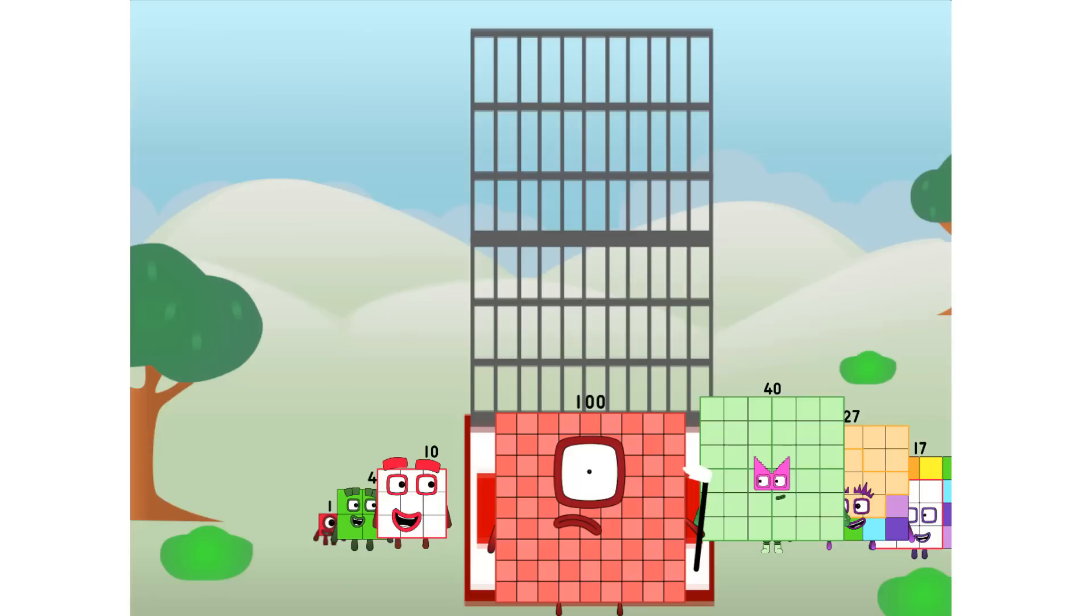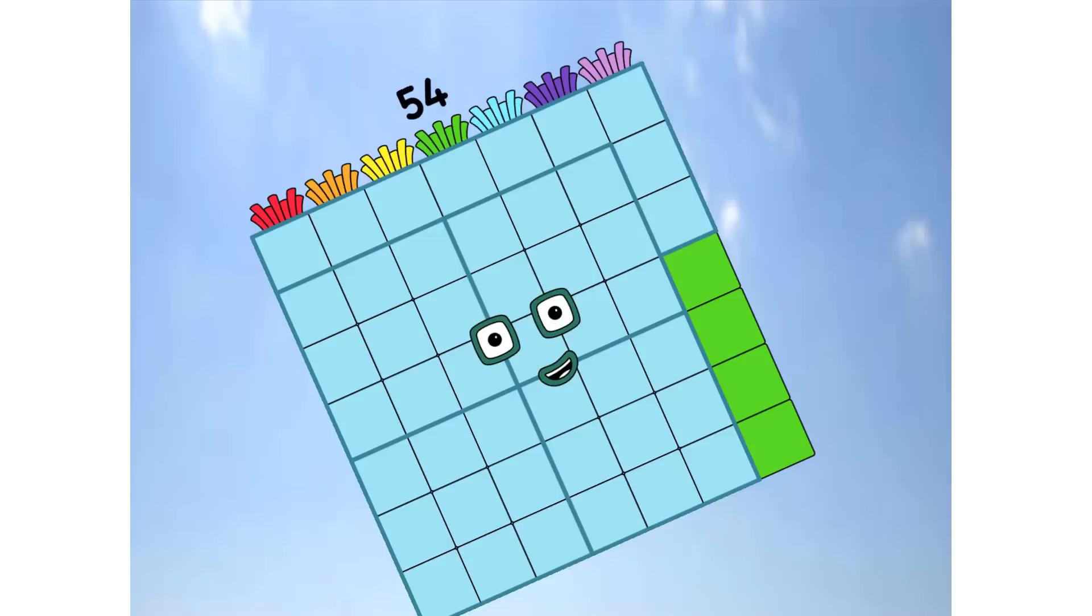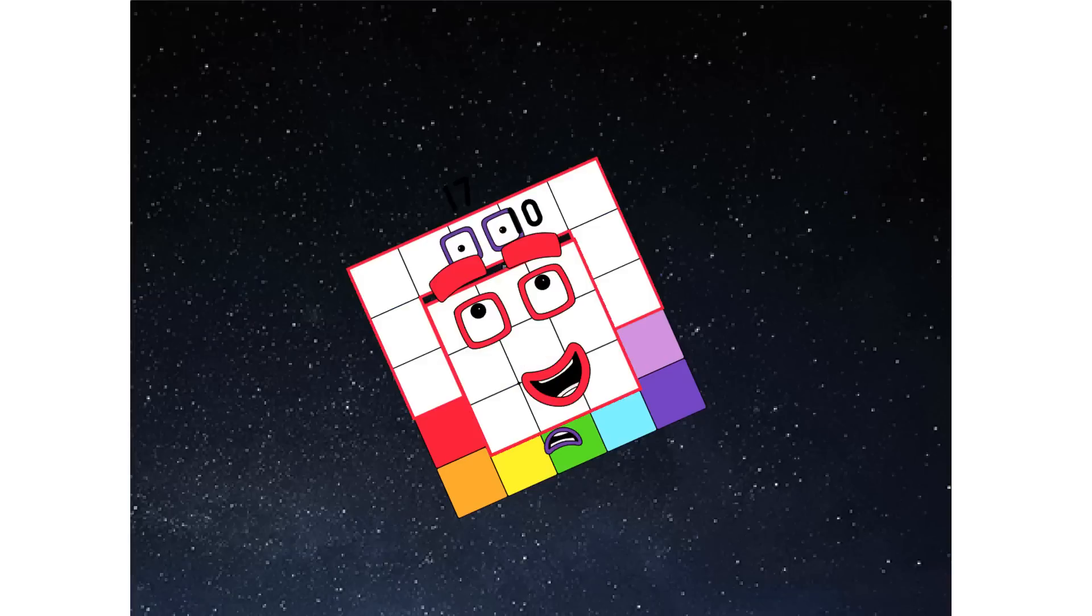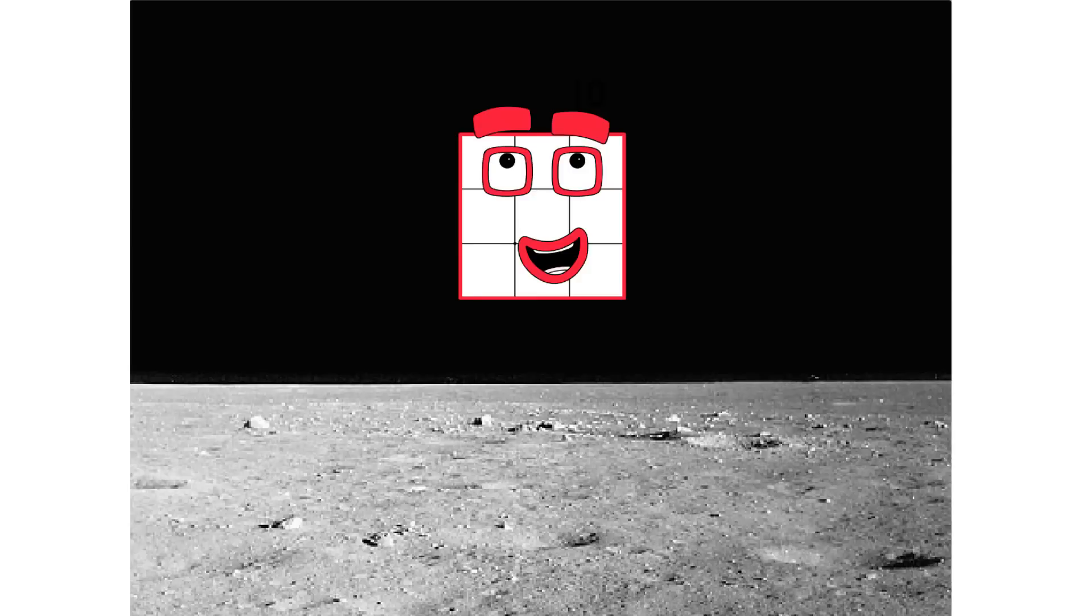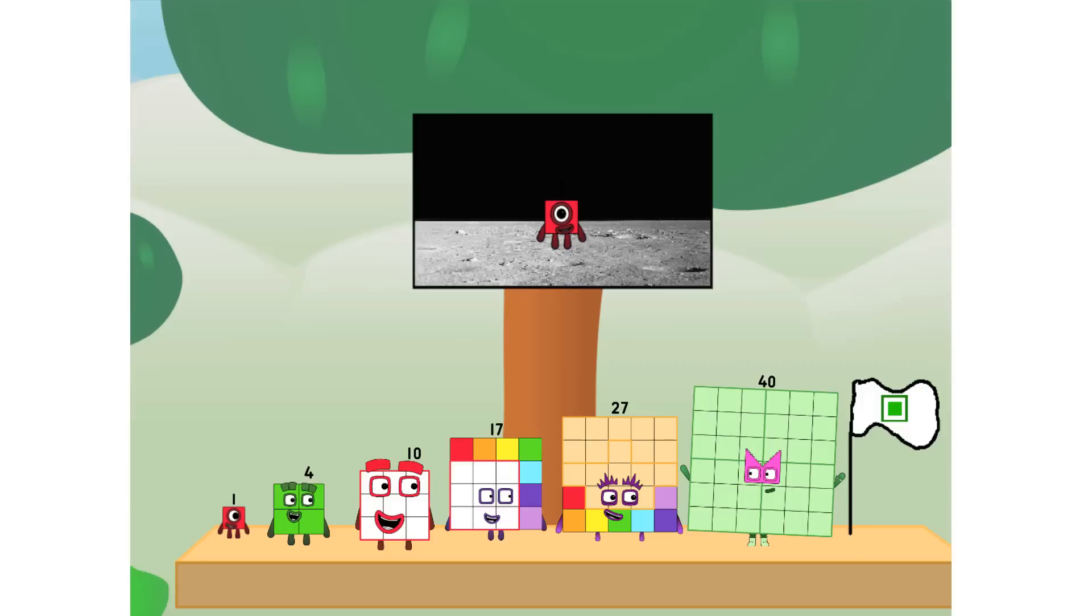Prepare for launch now. Achoo, we have liftoff! Primary launch stage completed. Engaging secondary stage. Achoo. We've reached space. Second stage complete. Achoo. Entering lunar orbit. Launching lunar lander. Achoo. The square has landed! We did it! The only thing left now is to plant the square club flag. Number one, we have a problem. I forgot the flag.